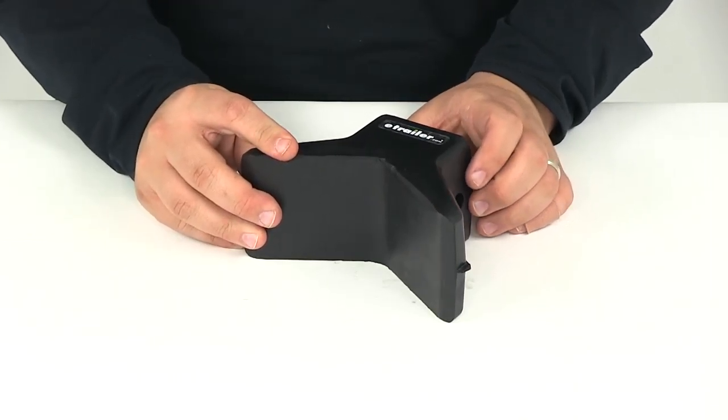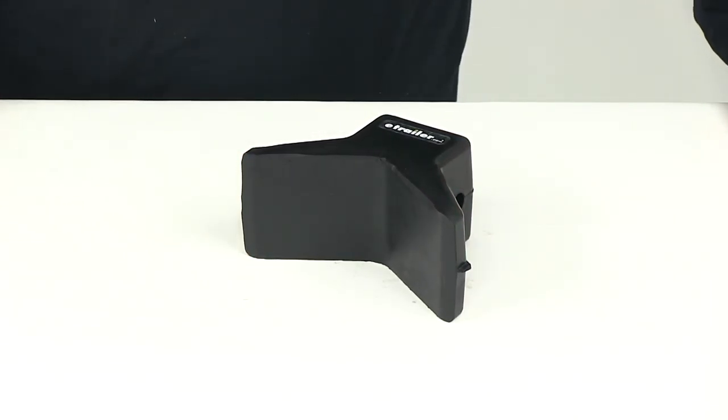That's going to do it for today's review of part number DL 21732, the Dutton Lanson boat trailer rubber Y-stop.